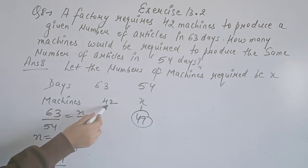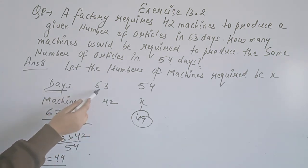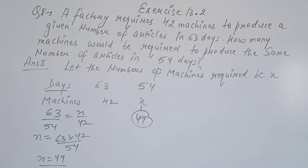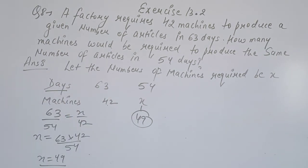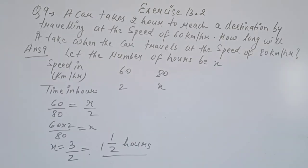When the number of machines is less, the number of days will be more, and vice versa. The number of machines is inversely proportional to the number of days. Now question number 9: A car takes 2 hours to reach a destination travelling at a speed of 60 km/h. How long will it take when the car travels at 80 km/h?